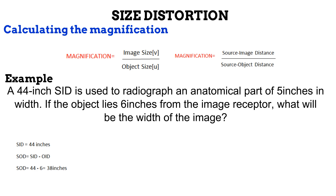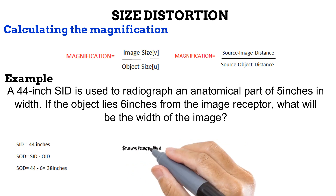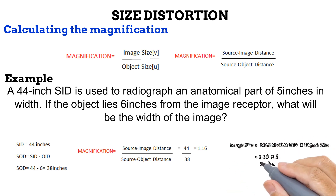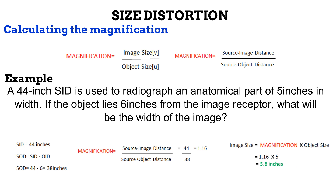Now that we know both our source object distance and source image distance, we have everything we need to calculate the magnification. Using the formula on the upper right-hand side of your screen, magnification equals SID divided by SOD — 44 divided by 38 — which gives us 1.16. What this means is that the image produced under these conditions would be 1.16 times larger than the anatomy. Since we know the anatomy or object size from the question and we have calculated the magnification, we can use the high school physics formula to get the size of the image. By making image size the subject of the formula, we get image size equals magnification times object size. This is 1.16 times 5, which gives us a final answer of 5.8 inches.